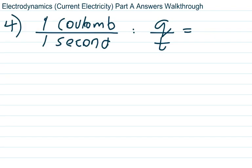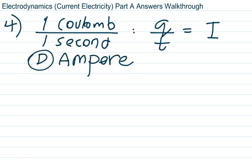Number 4 asks: what's a Coulomb per second? Per means divide, so that's Coulombs over seconds. Coulombs are the units for charge Q, and seconds are time T. So that's Q over T, which is current — measured in Amperes. Choice D, Ampere.